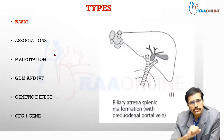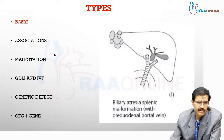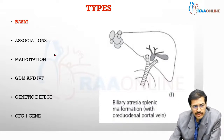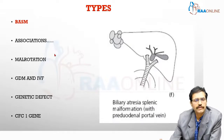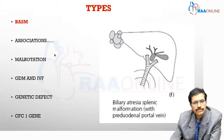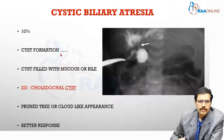The association of biliary atresia with splenic and vascular malformations seems to be more related to the timing of the insult rather than purely genetic factors. The critical time appears to be around 30 to 35 days of gestation, during which the spleen and major vasculature around the developing liver are forming. So the association between biliary atresia and splenic malformation is more a timing-related phenomenon than a purely genetic one.